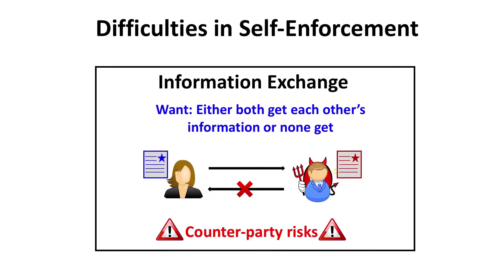So why is designing smart contracts hard? Let's look at a very simple example: information exchange, the standard fair exchange problem. You have Alice and Bob with their pieces of information and they just want to exchange it. An honest Alice will send over her information first, but then Bob becomes corrupt and does not send over his. So we are dealing with counterparty risks in the context of contracts.